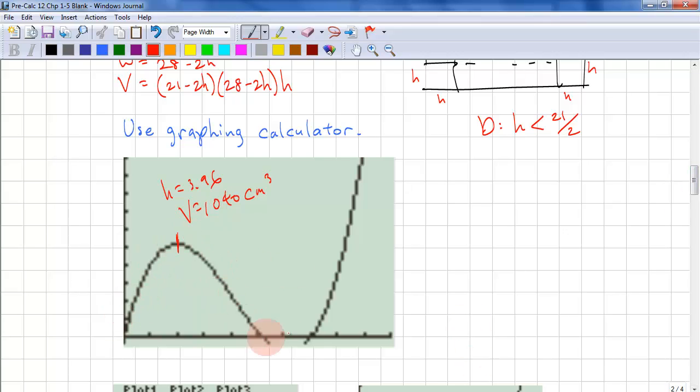The question is, this is a maximum. Why is this not the maximum? We talked about it earlier. And it's because it gives us a negative value for the length. So that means it's not part of the domain.